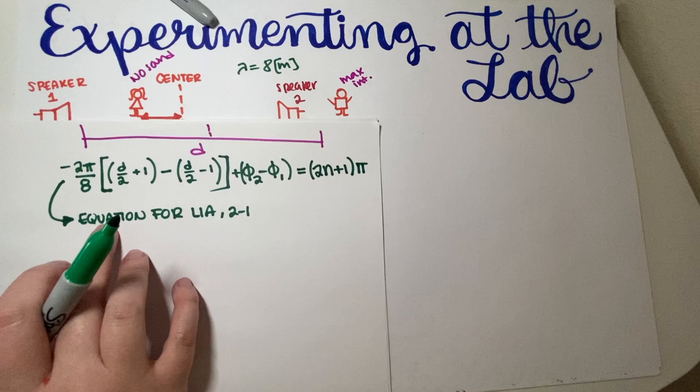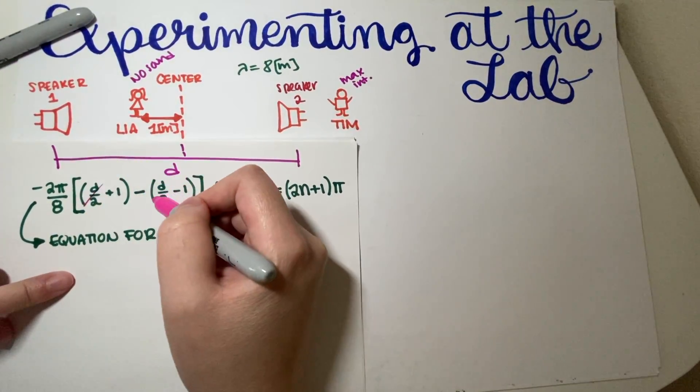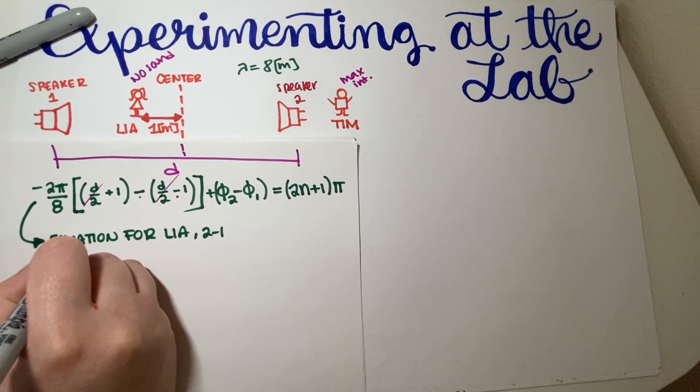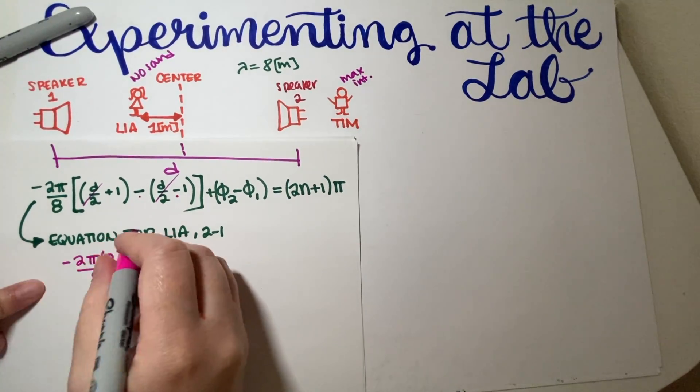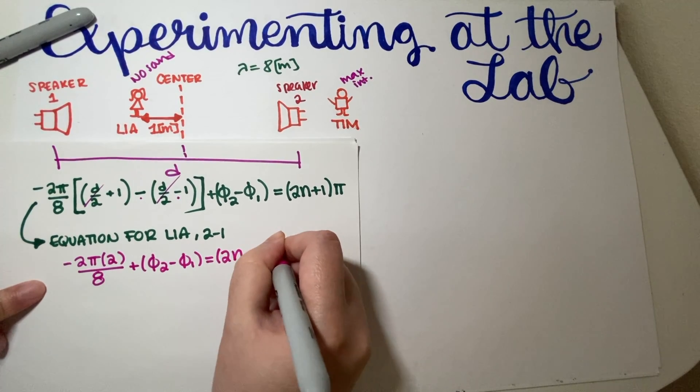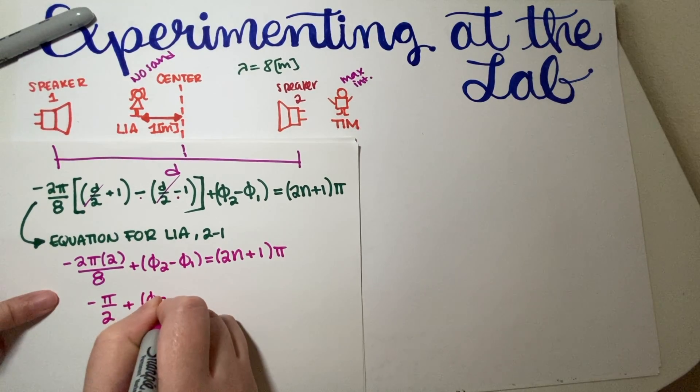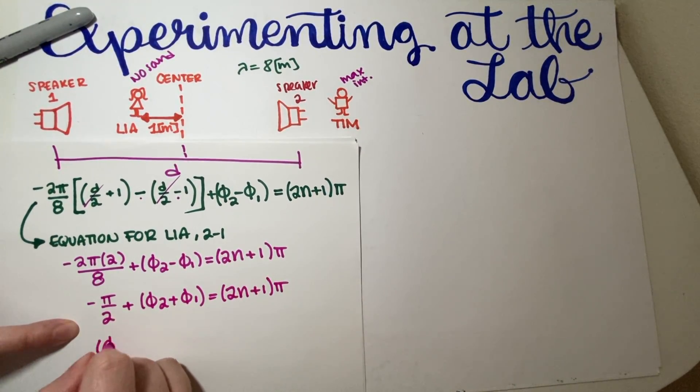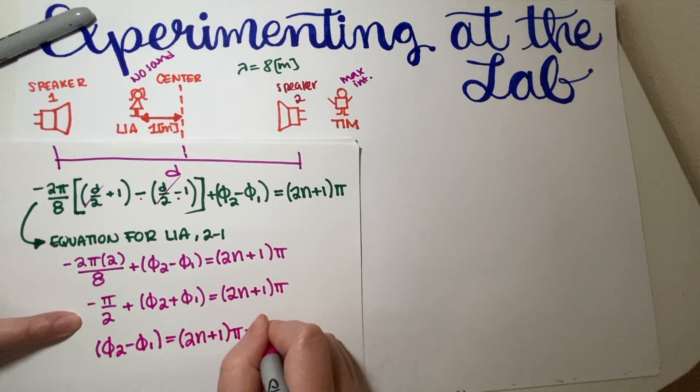Now let's just go ahead and simplify this part over here. So if I simplify, let's see. Okay. So this D/2 go away because we have plus minus. These two add up because minus and minus are gonna add up. So actually, I would have -2π times 2, one plus one is 2 divided by 8 plus this subtraction, which is what I'm trying to find. And this has to be equal to (2N+1)π. Simplify over here. So this is a half, -π/2.